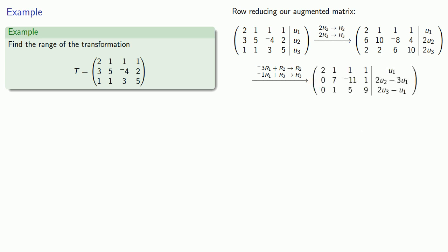Moving on to the second row, the pivot is 7, so we'll multiply the third row by 7 and add a multiple of that second row to eliminate the entry below the second row pivot.